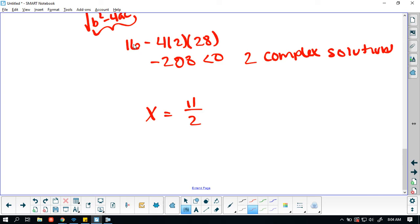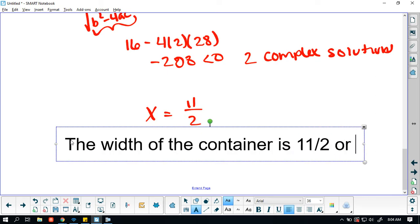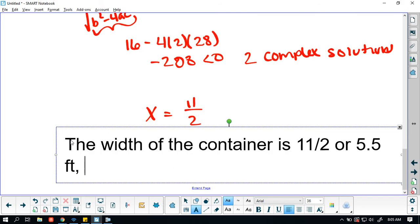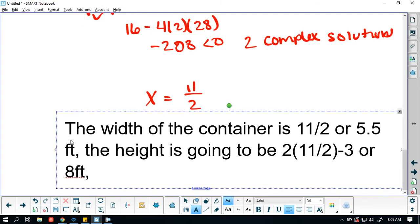Alrighty. So let me type this out for you guys. And then just looking at the container, you have 2x minus 3 for the height. So the height is 11 divided by 2 times 2 minus 3, or 8 feet. And then again, looking at the illustration that they provided us, the width is x minus 2. So then the length is x minus 2, or 11 divided by 2 minus 2, or 3.5 feet.